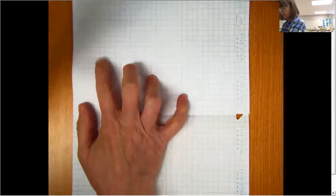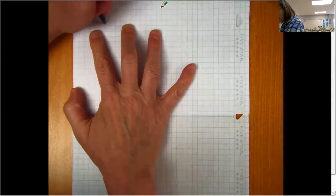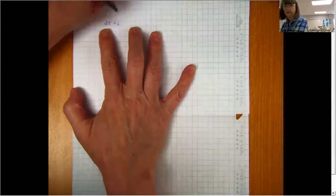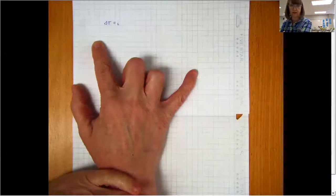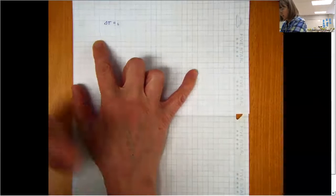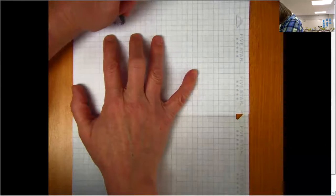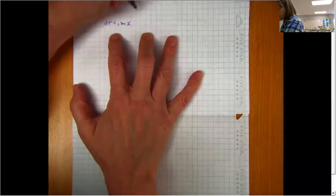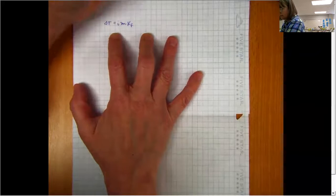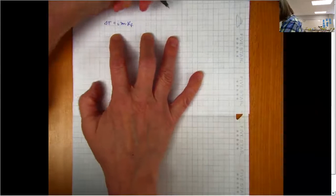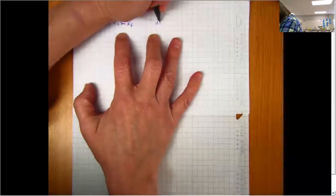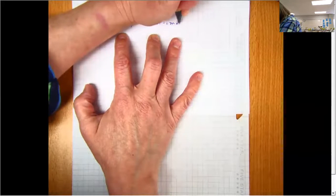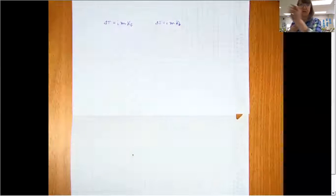Remember that our formula is that the change in temperature is going to be equal to the Van't Hoff number, which we'll talk about in a second, times the molality times a constant. And that constant can either be the freezing point constant if you're doing the change in freezing point, or it can be the boiling point constant, which we'll usually be given.